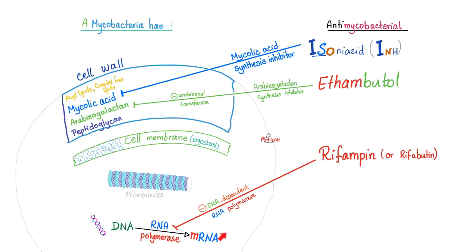Here is mycobacterium tuberculosis. We have a cell wall, a cell membrane, and DNA. Let's inhibit the synthesis of mycolic acid in the cell wall — welcome isoniazid. Let's inhibit arabinosyltransferase, which inhibits the formation of arabinogalactan in the cell wall — welcome ethambutol. Or if you want to inhibit the DNA-dependent RNA polymerase, you can use rifampin.